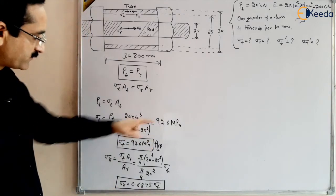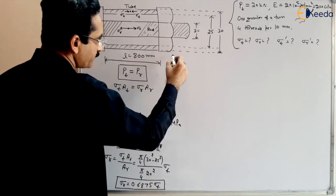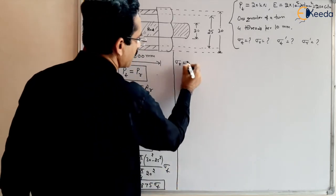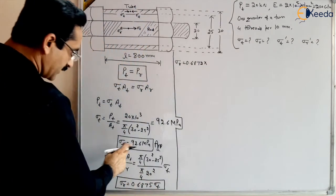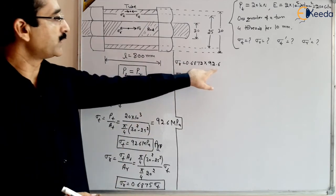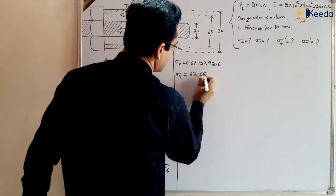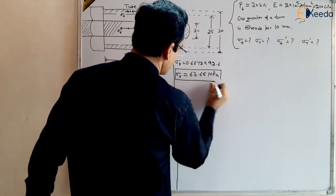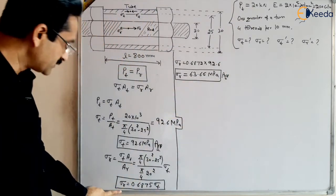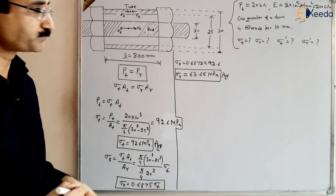Since σ_t = 92.6 MPa, we can find σ_r = 0.6875 × 92.6 = 63.66 MPa. So when a force of 20 kN is applied, the stress in the tube is 92.6 MPa and the stress in the rod is 63.66 MPa. This completes the first part of the question.